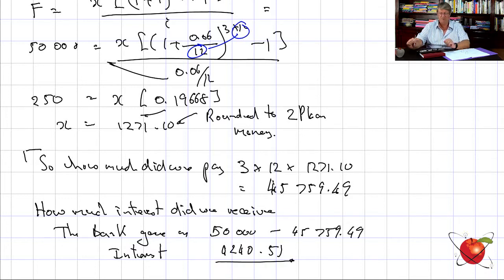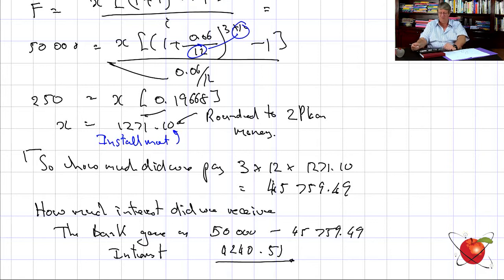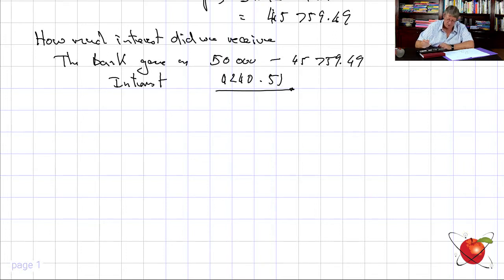The interest received was therefore 50,000 − 45,759.49 = 4,240.51. That's quite straightforward — we paid each installment every month for 36 months, and the bank credited us 4,240.51 in interest.